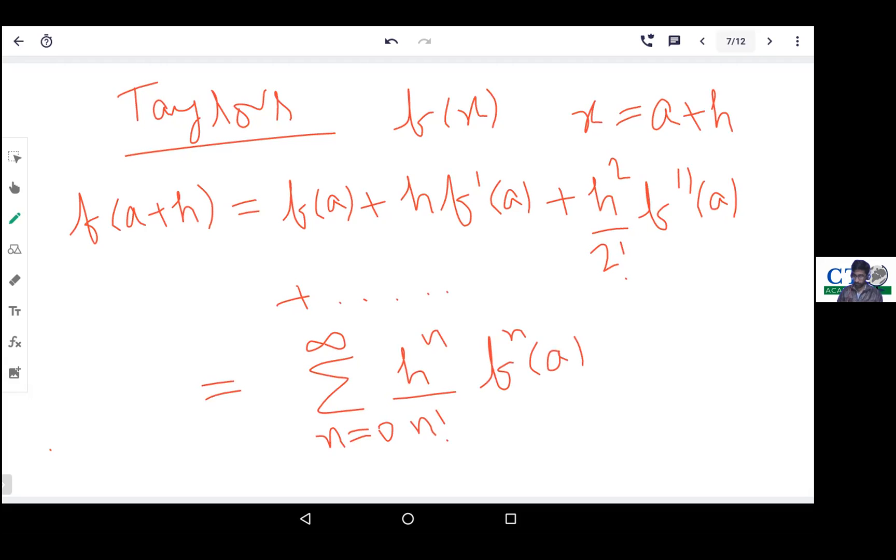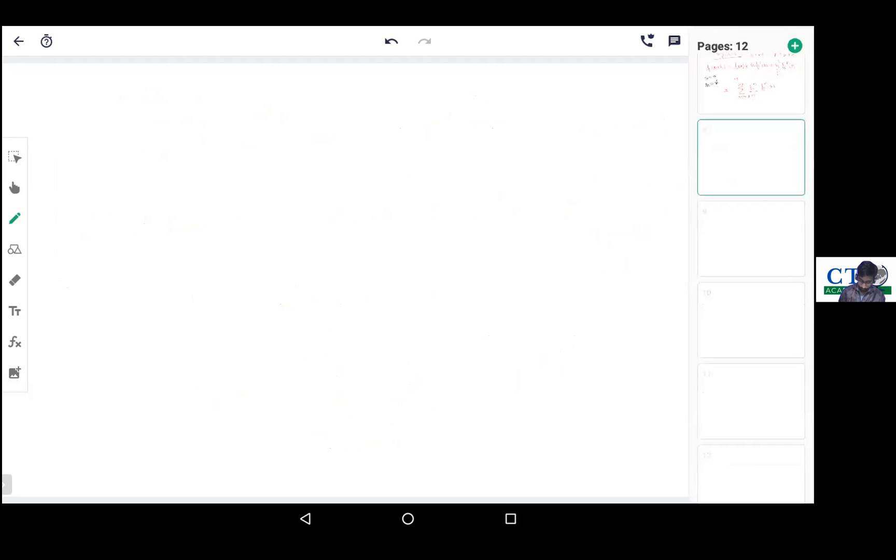Maclaurin series is simple to derive - just replace a equals to 0 and h equals to x. Then the new series that will come will be known as Maclaurin series.